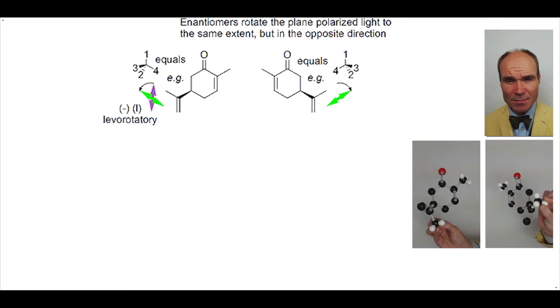This is given the descriptor plus and is described as dextrorotatory, represented by a small d.